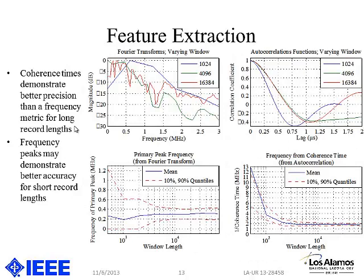On the left I show frequency content as Fourier transforms of different window lengths, and on the right autocorrelations calculated with different window lengths. The location of the peak frequency is relatively stable as window length increases — no systematic bias for short records. However, for the autocorrelation approach there is a systematic bias for short records, though precision tends to be better behaved overall. Based on these results, I'd recommend the autocorrelation approach unless you're limited to short time records, in which case the frequency approach might be better.